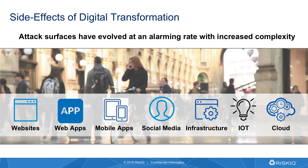Essentially, what has been said for a long time is that businesses have been going through digital transformation. At RiskIQ, we really see that this has already taken place and that the digital transformation is really just an evolution. In the early days, businesses were essentially taking some of their processes and moving them online through infrastructure assets and websites. But over the years, we've seen an increase in complexity because of all these new digital channels. Now we're not just dealing with websites and infrastructure anymore — we're dealing with mobile applications, social media, cloud-based controls, and internet of things. The attack surface has essentially evolved at an alarming rate, and it's really increased the complexity that makes it difficult to manage.